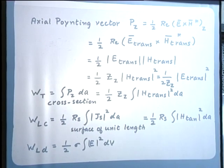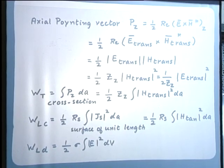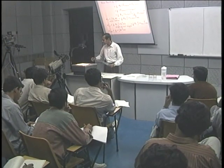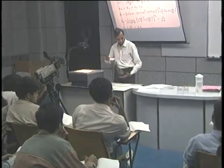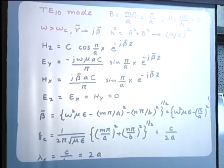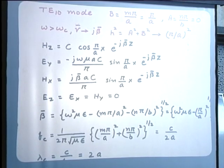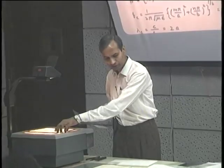This calculation can be carried out for any particular mode of interest. Since the dominant TE 1,0 mode is of greatest practical utility, we carry out this calculation for that mode only. The starting point is the field expressions for the TE 1,0 mode, ignoring losses and assuming perfect dielectric and perfect conductors. For the TE 1,0 mode, we have three field components, and from these we can calculate the various quantities required for the attenuation constant.